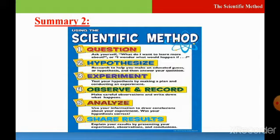Step number four: Observe and record. Make careful observations and write down what happens. Step number five: Analyze. Use your information to draw conclusions about your experiment. Was your hypothesis correct? You will ask yourself, was my hypothesis correct?